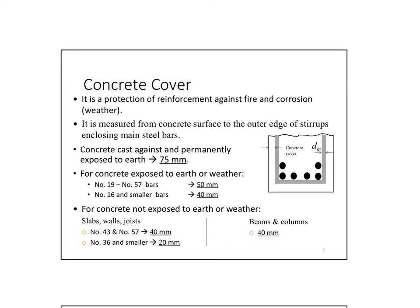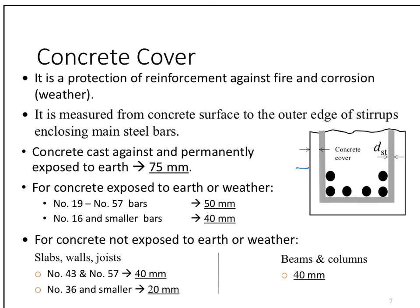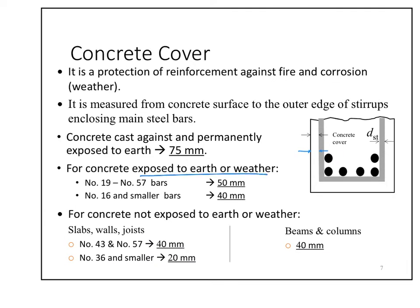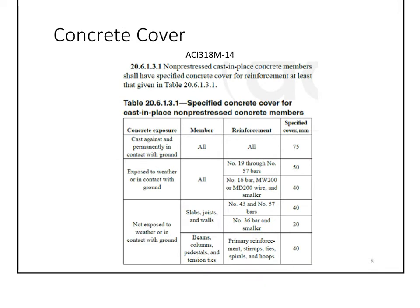The concrete cover is the outer layer beyond the stirrups, meant to protect the steel cage from the environment — corrosion, weather, and so on. It is specified by the code. ACI 318-2014 gives minimum concrete cover for various structural members depending on their exposure: members exposed to earth and weather require more cover than interior beams and columns, and footings permanently exposed to earth require extra cover.